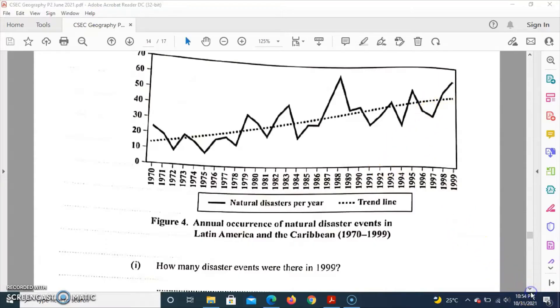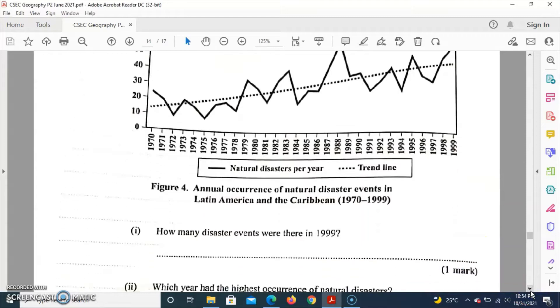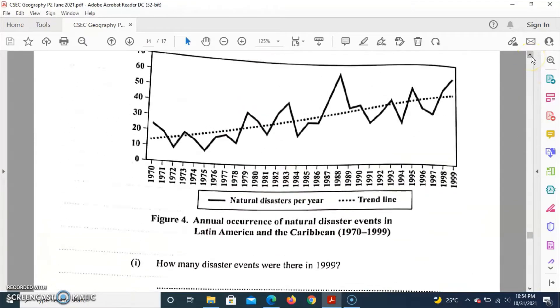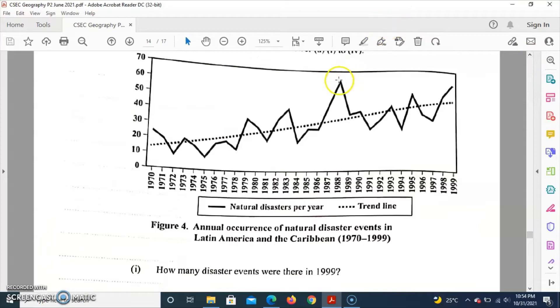Which year has the highest occurrence of natural disaster? We're to look for the year which has the highest occurrence and you can see the peak here, and this peak here is 1988. So 1988 is the year with the highest occurrence of natural disaster.